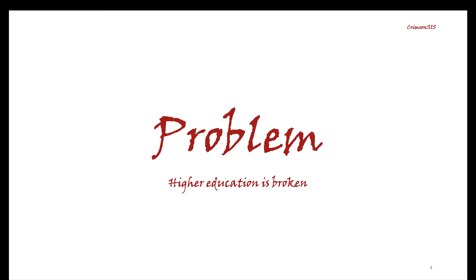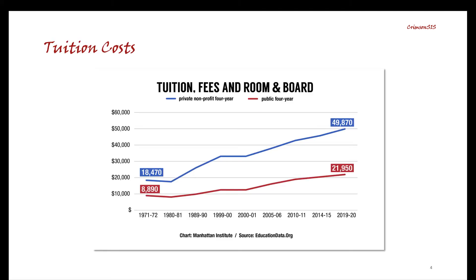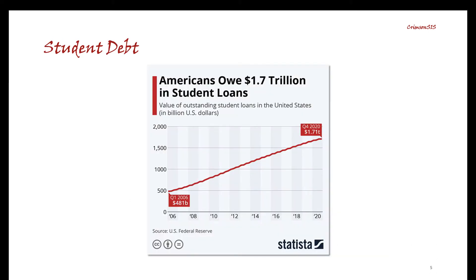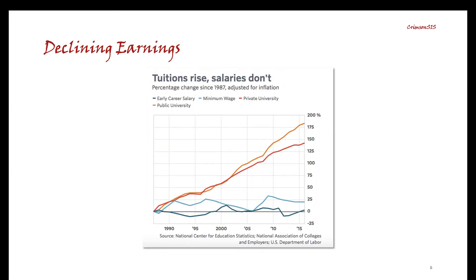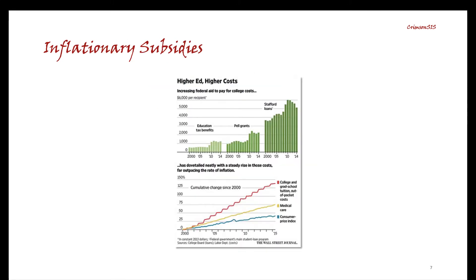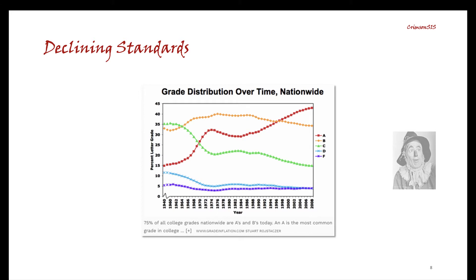Here's the problem. Higher education is broken. Tuition and fees at the typical private and public institution of higher learning have nearly doubled since 1970. Student loan debt now tops $1.7 trillion and there's no end in sight to tuition creep. While tuition prices have gone up, salaries have remained consistent since 1990, making it ever more difficult to pay down student debt. Cumulative increases in college costs owe to increases in federally guaranteed student loans. Much like the 2008 mortgage crisis, we're on the brink of massive defaults. This has also precipitated declining standards in education and correlate grade inflation.